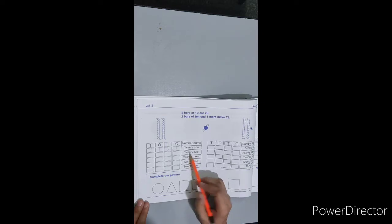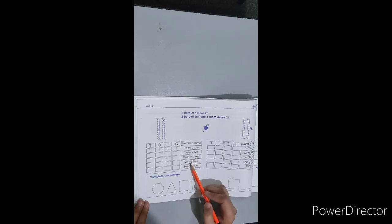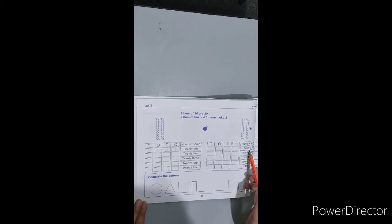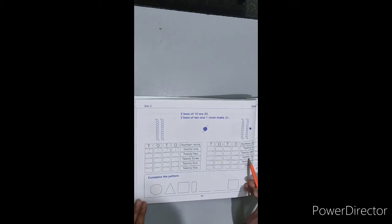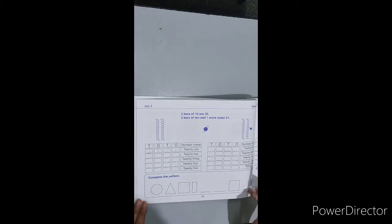22, 23, 24, 25, 26, 27, 28, 29, 30. You have to write all these numbers to complete the page.